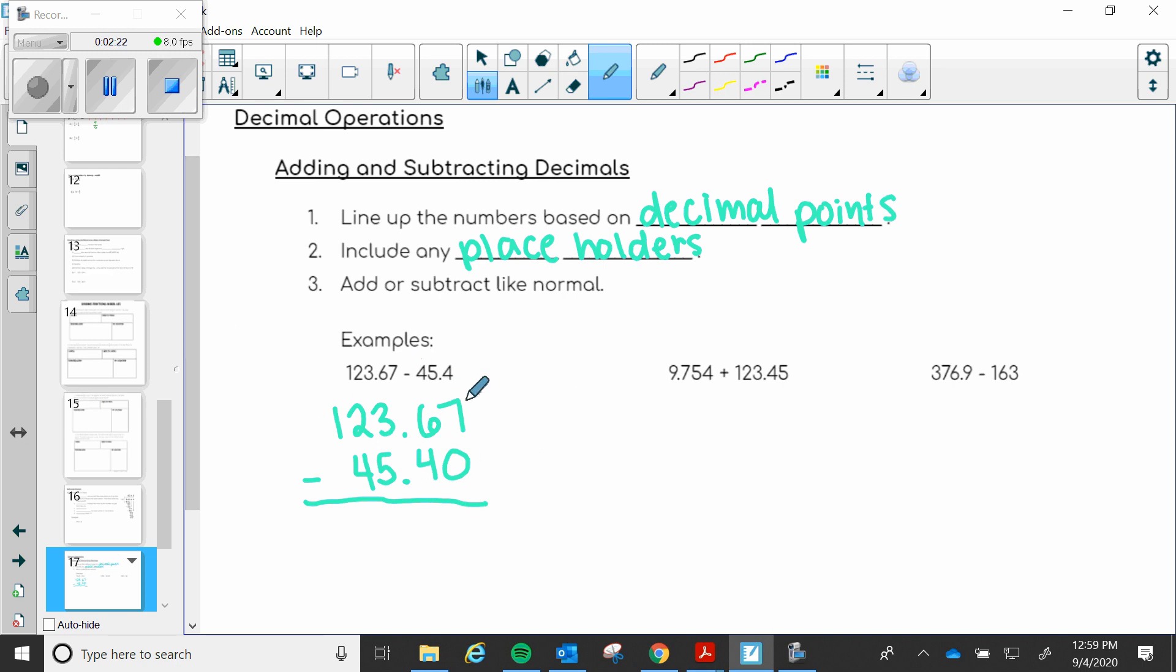So then we just subtract like normal. Seven minus zero is seven. Six minus four is two. Bring down your decimal point. Three minus five, oh no can't do that. So I need to borrow and turn this into a 13. 13 minus five is eight.